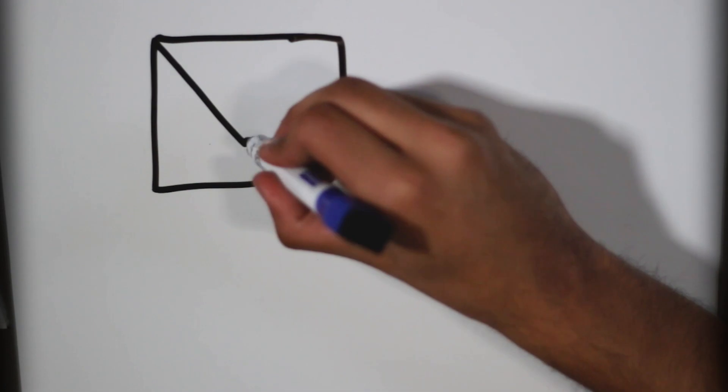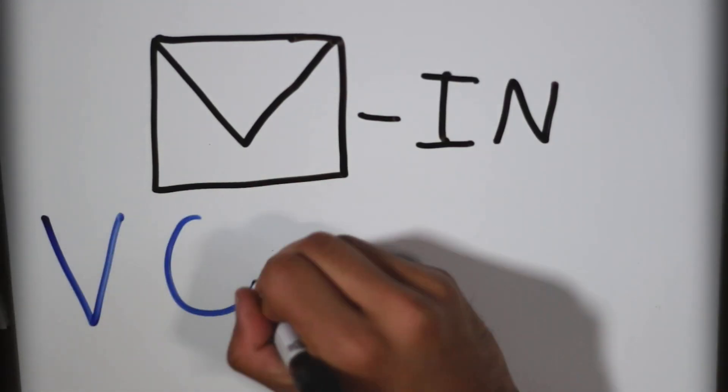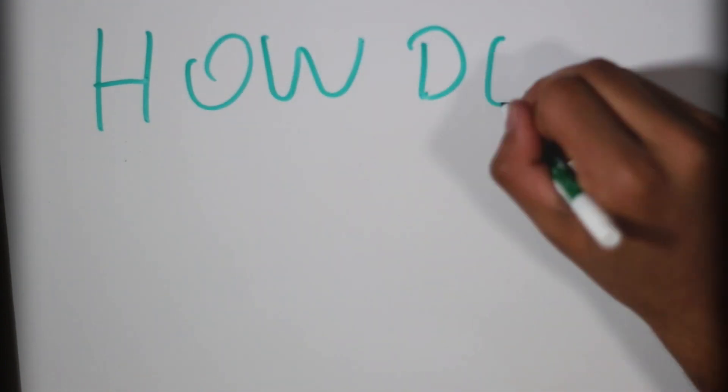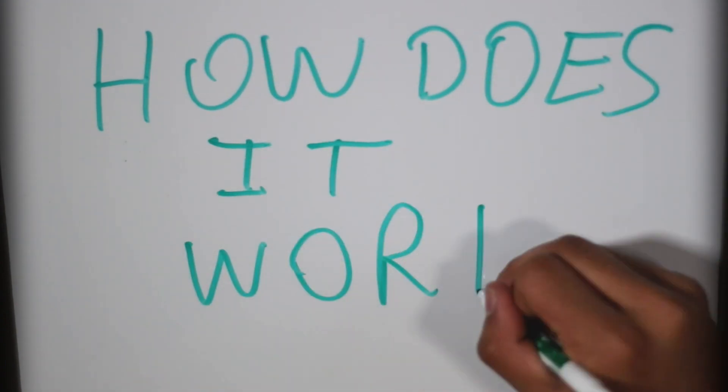With the 2020 election happening on November 3rd, a question a lot of people are having right now is regarding mail-in voting. How does it work, and how can we read all those ballots in such a short amount of time?